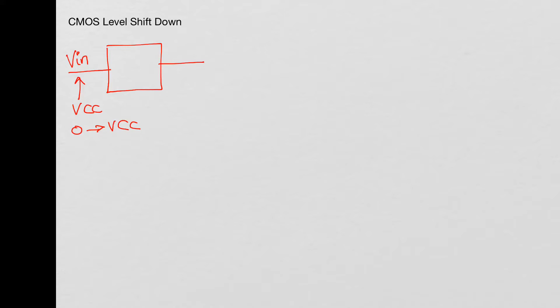Welcome to E-Know-How. In this video we will look at a CMOS level shift down circuit. What this level shift down circuit does is it takes a VIN signal at a higher voltage — a VCC voltage — so the signal is a digital signal that goes from 0 to VCC, and shifts it down to a signal V_out which is a VDD level signal, a lower voltage. So this signal goes between 0 and VDD.